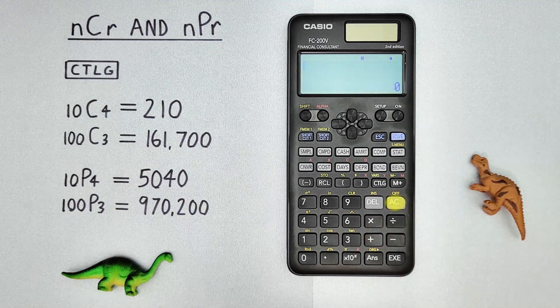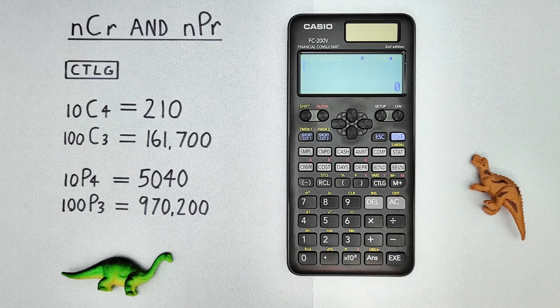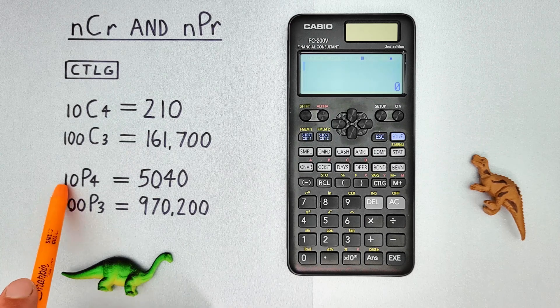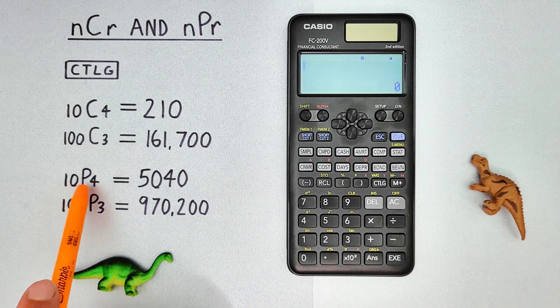We can also use this to solve permutations. Permutations is when you choose a number of items from a set and the order you choose them does matter. So if we have 10 choose 4 permutations.